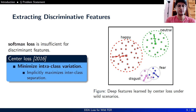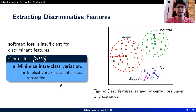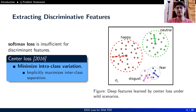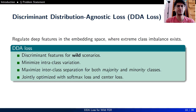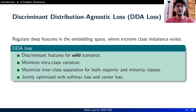Softmax loss, typically used in a CNN, is insufficient for discriminant features. Center loss comes to the rescue and minimizes intra-class variation, which implicitly maximizes inter-class separation. However, looking at deep features learned by center loss under wild scenarios, even though majority classes are well separated, minority classes are still overlapped in the d-dimensional embedding space. Our solution is Discriminant Distribution-Agnostic Loss, or DDA Loss, to regulate deep features in the embedding space where extreme class imbalance exists. DDA Loss yields discriminant features for wild scenarios, minimizes intra-class variation, and maximizes inter-class separation for both majority and minority classes.